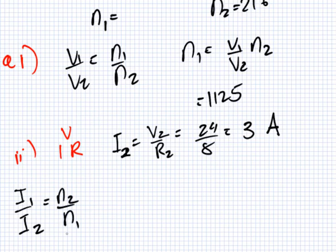And which are we looking for? The I1, is it? Yeah, okay. So then I1 equals N2 over N1 times I2. What's N2? 1125.